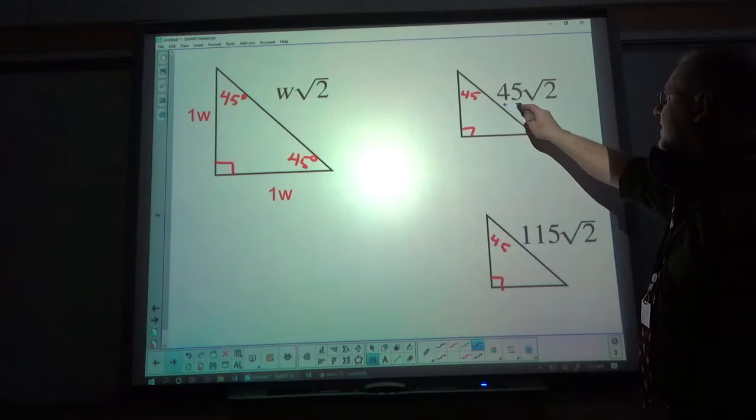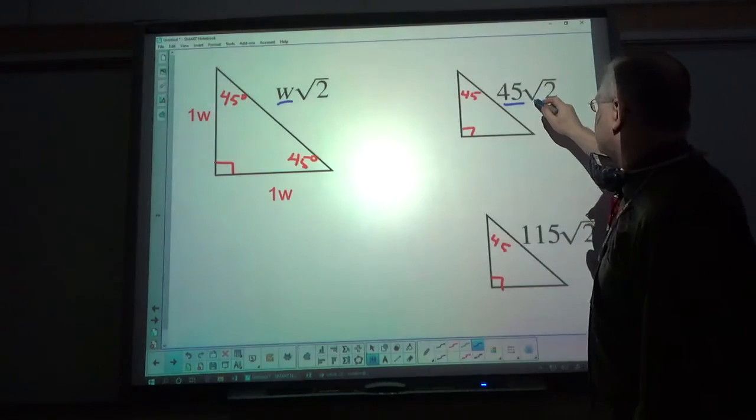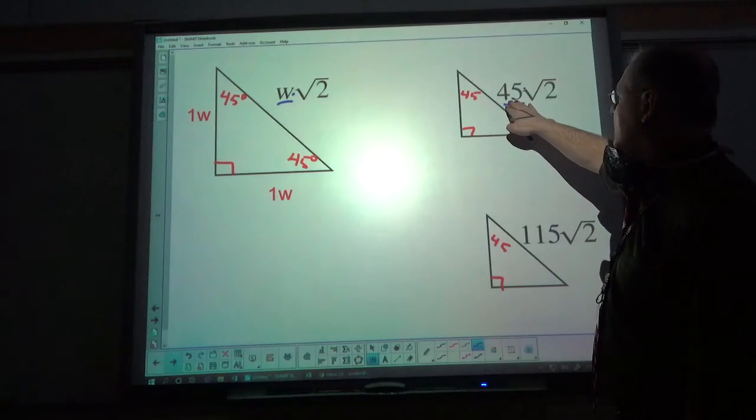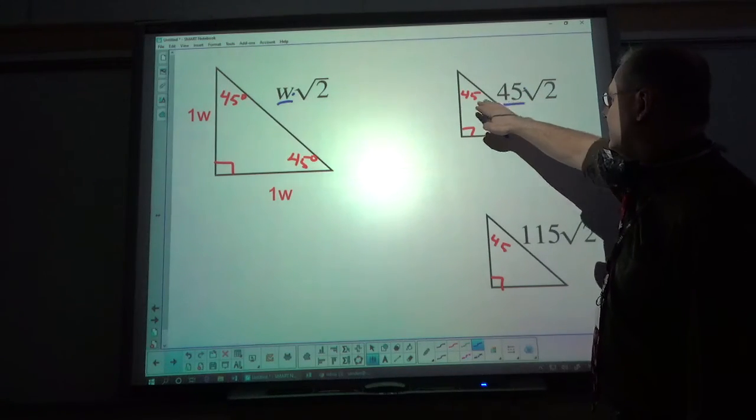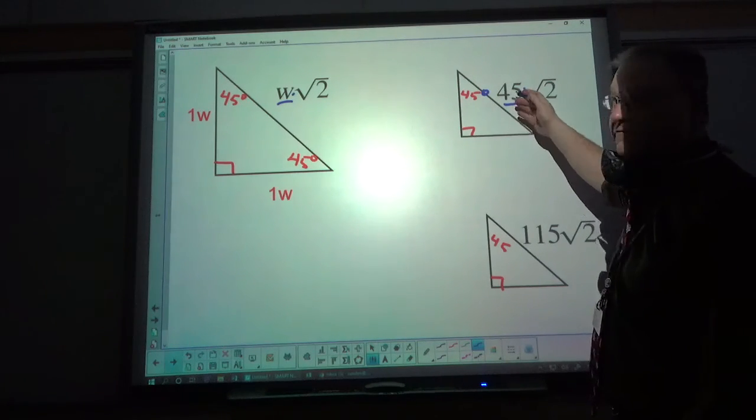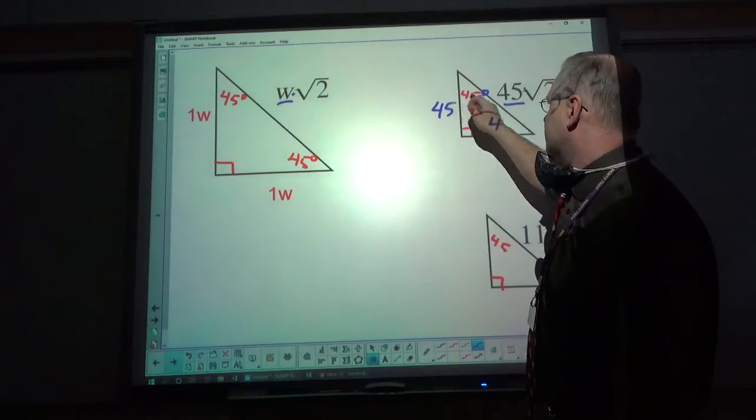So this is the w next to square root of two. So the w in this case would be 45, not this 45, that's degrees. This is a number, like inches. So 45 is w in both cases.